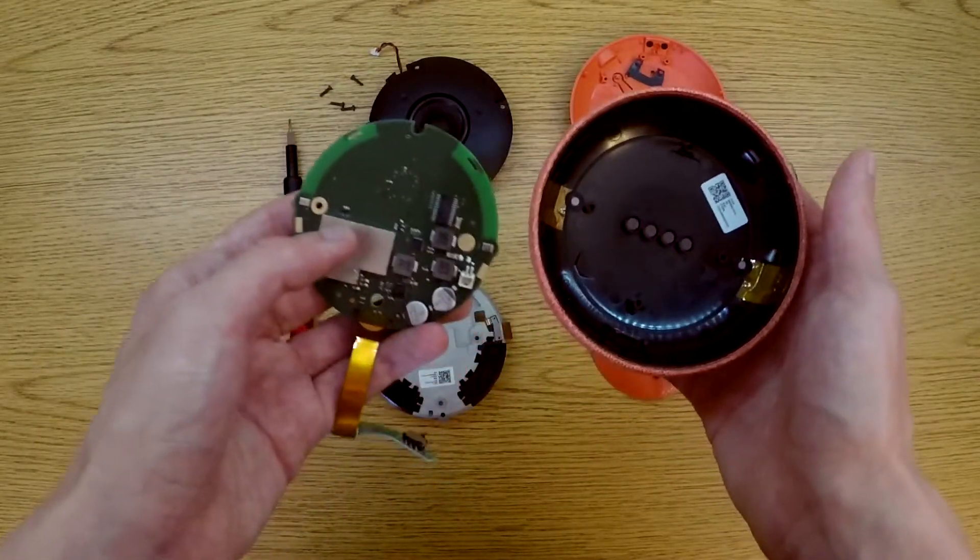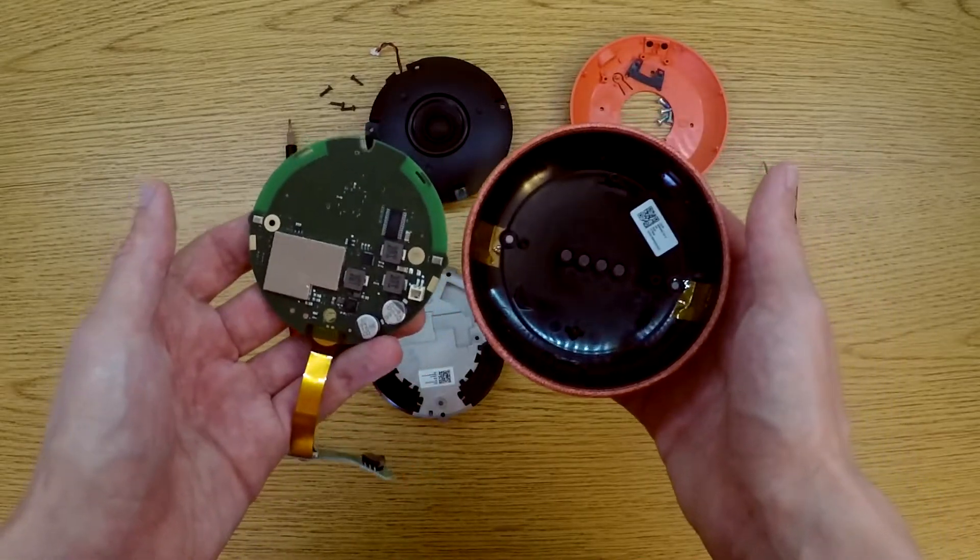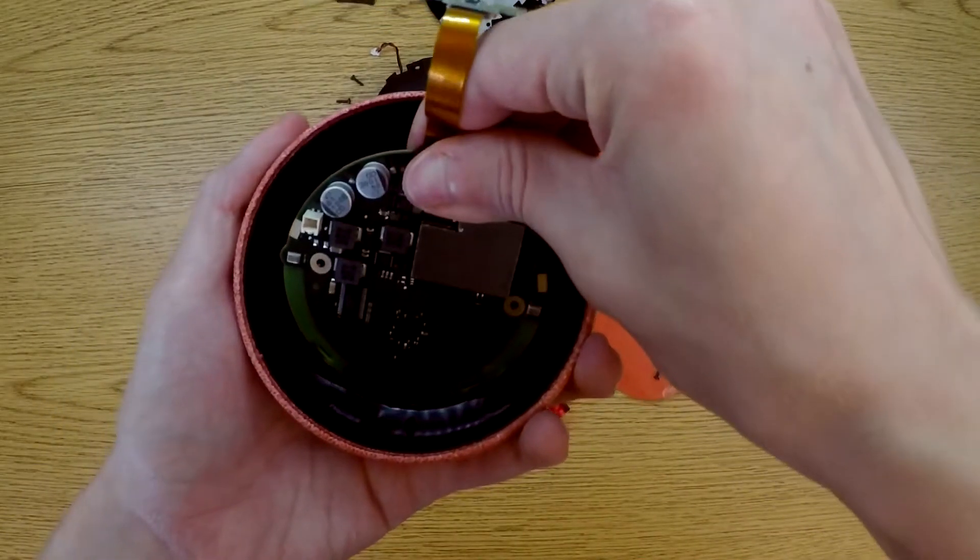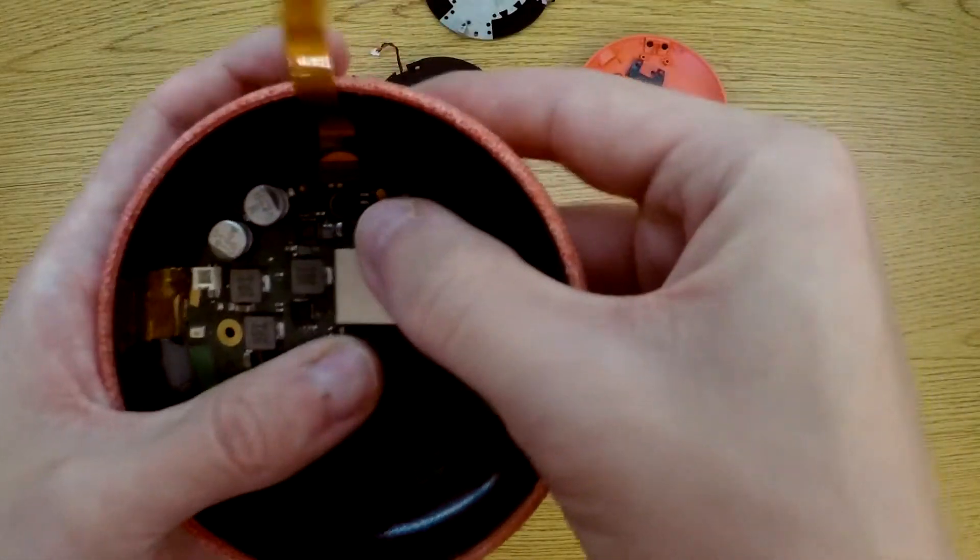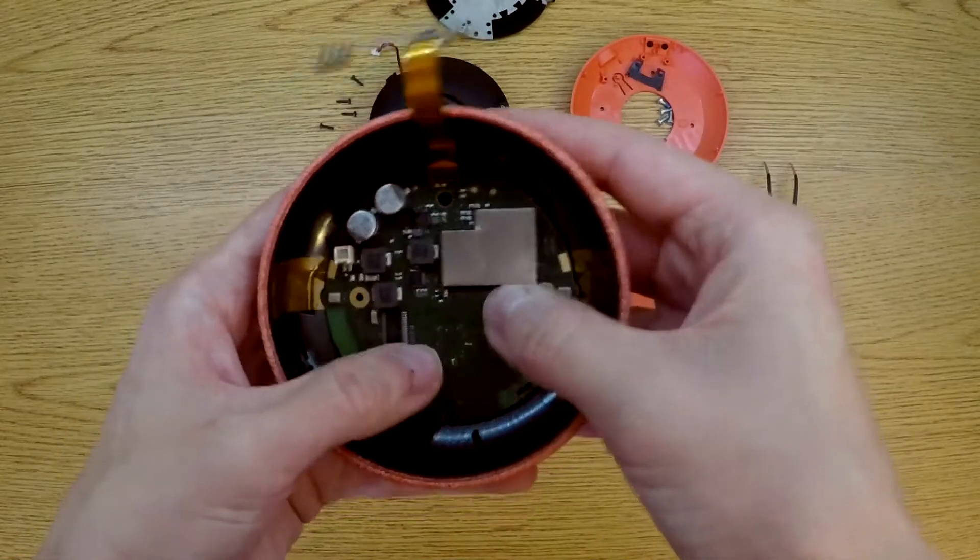So now that this is fully taken apart, I can start putting it back together. This part needs to line up so that this screw hole can fall into place.